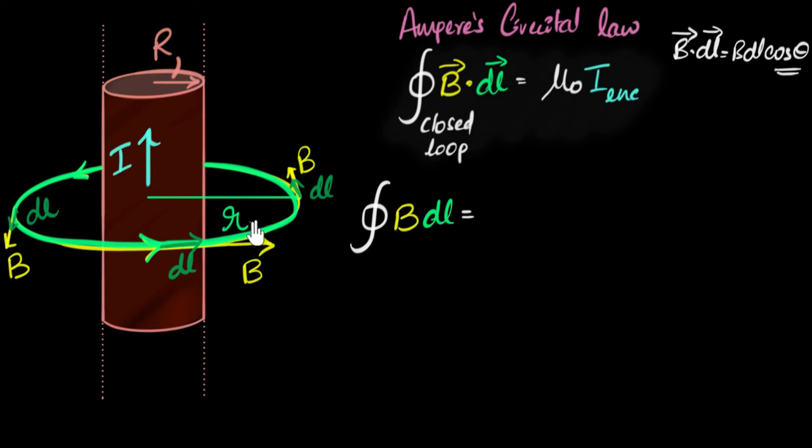Okay what does that equal? Well notice because the magnetic field is the same everywhere, the magnitude is all that matters now. The magnitude of the field is the same. I can pull this B outside. So this is a constant. So I can pull that B outside the integral and now I just have to do integral of dl.